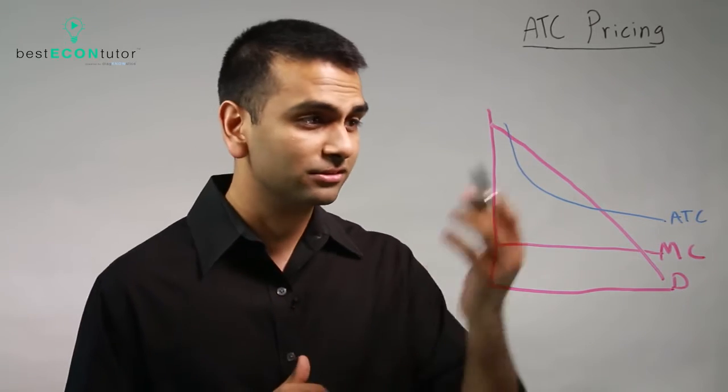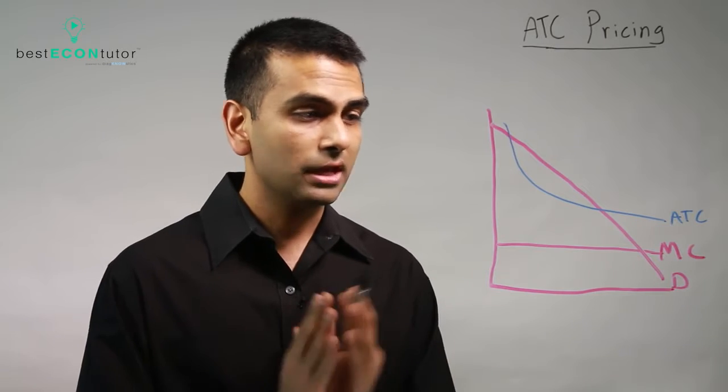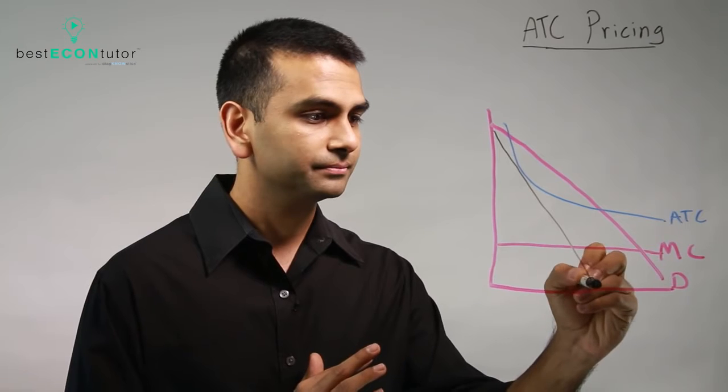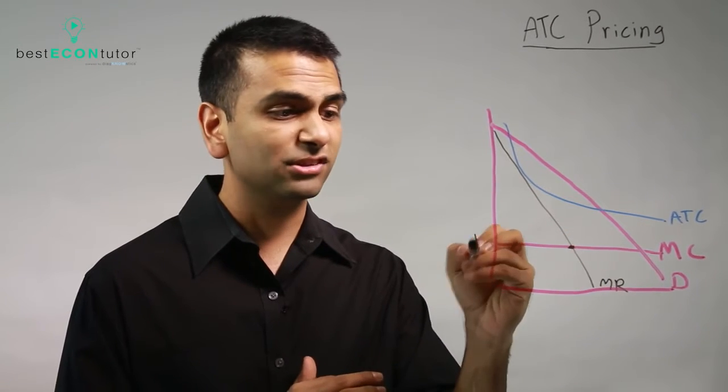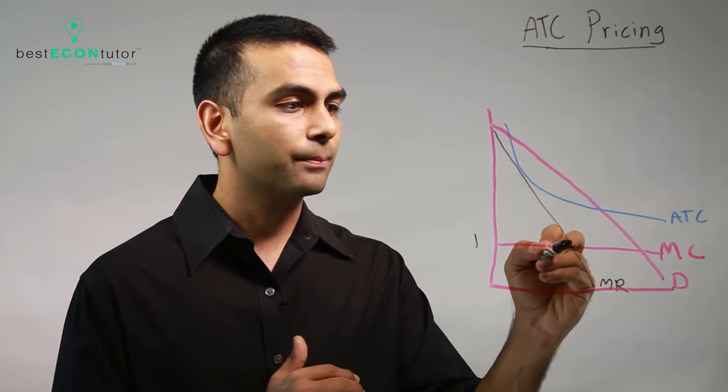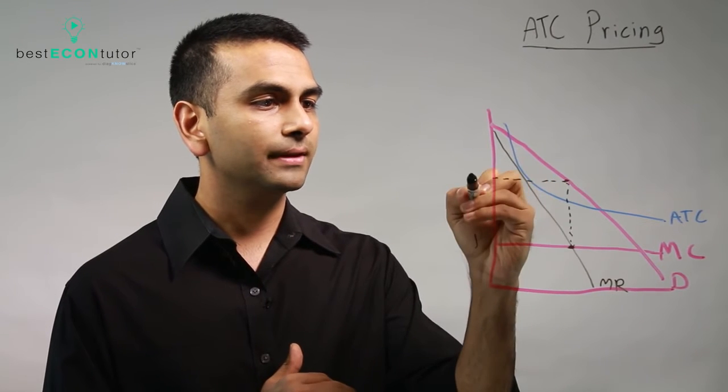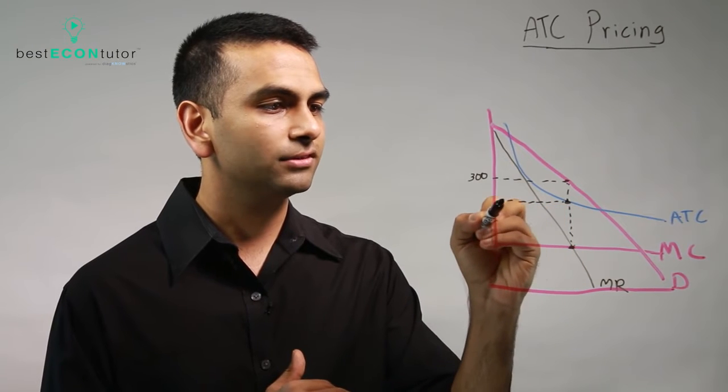Let's say this is the graph for a natural monopoly. If there's no regulations, what they'll do is they'll make the MR curve, they'll find where MR equals MC. Let's say the MC is one—it costs you a dollar to make one more unit. Well, the price we're going to charge is up here. So let's say that's $300 a flight, and let's say your average cost is $200 a flight, so you're making a profit. No problem.